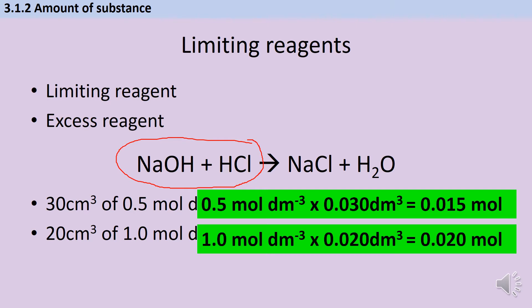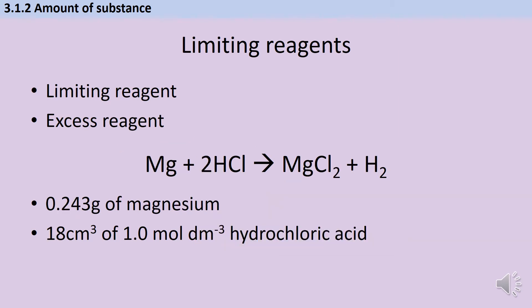In a 1:1 ratio, I can just look at these numbers and see which is bigger — that's my excess. I can see clearly that my acid is in excess and my alkali is limiting. So I can say I'm going to make 0.015 moles of sodium chloride and water. That uses up all my sodium hydroxide, and I'm going to have 0.005 moles of acid left over. So if I was trying to recover that salt, it wouldn't be pure — it would have hydrochloric acid contaminating it.